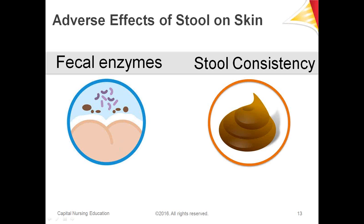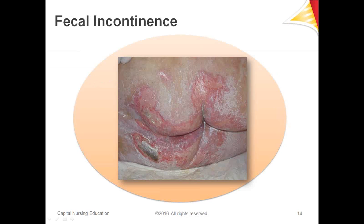Now we're coming to the pictures. Looking at a photo of fecal incontinence, clearly there's a significant problem — skin is being damaged and eroded in areas typical of fecal incontinence. We can see the great damage caused by fecal incontinence. So what do we do when this is what we're presented with?